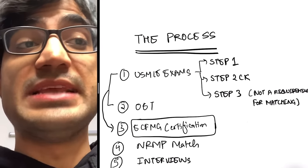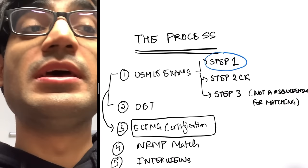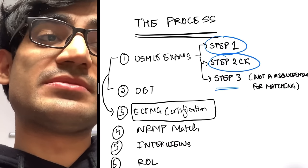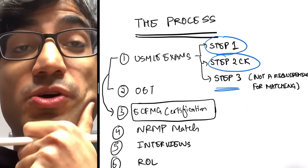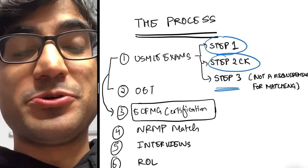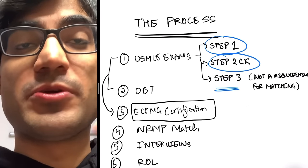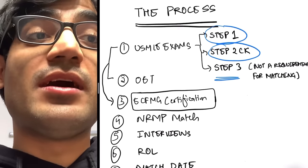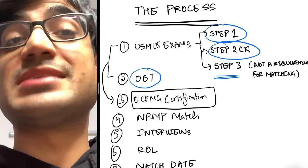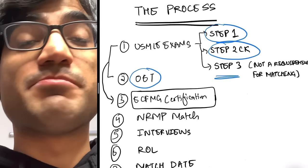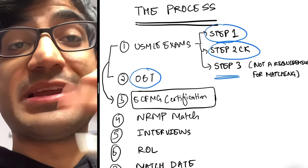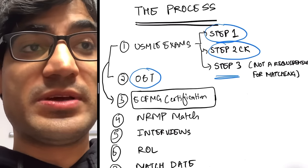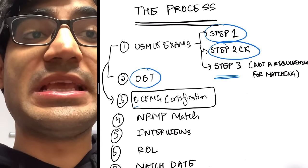The whole process really starts with two main exams: Step 1 and Step 2 CK. Step 3 is not a mandatory exam to get into residency — most people give Step 3 after they get into residency. You also need to give an exam called OET, which is a Step 2 CS replacement. It tests your English skills and is called the Occupational English Test. Once you give Step 1, Step 2 CK, and OET, you can get ECFMG certified.